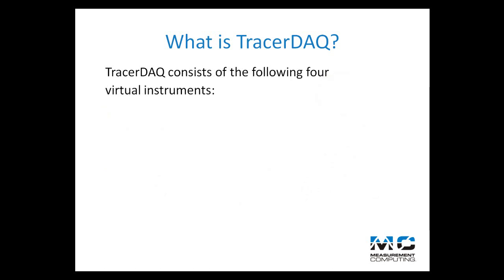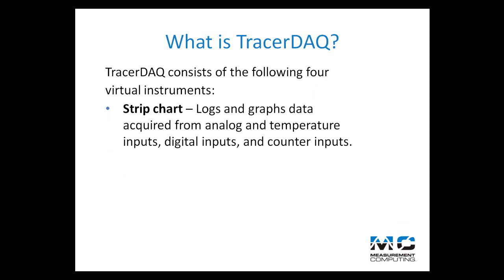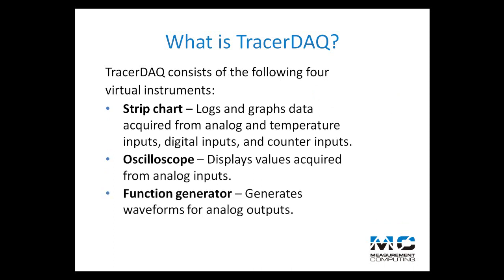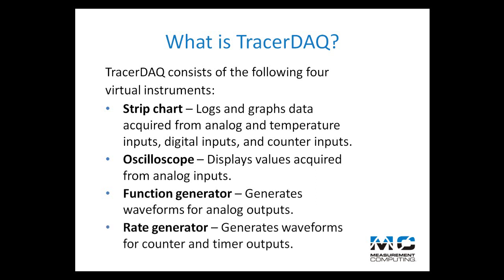TracerDAC consists of the following four virtual instruments: the strip chart, which logs and graphs data acquired from analog and temperature inputs, digital inputs, and counter inputs; the oscilloscope, which displays values acquired from analog inputs; the function generator, which generates waveforms for analog outputs; and the rate generator, which generates waveforms for counter and timer outputs.